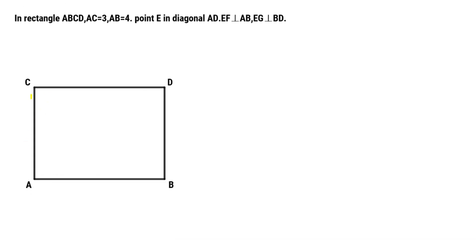In rectangle ABCD, AC equals three units, AB equals four. Point E is any point on diagonal AD. EF perpendicular to AB, EG perpendicular to BD.